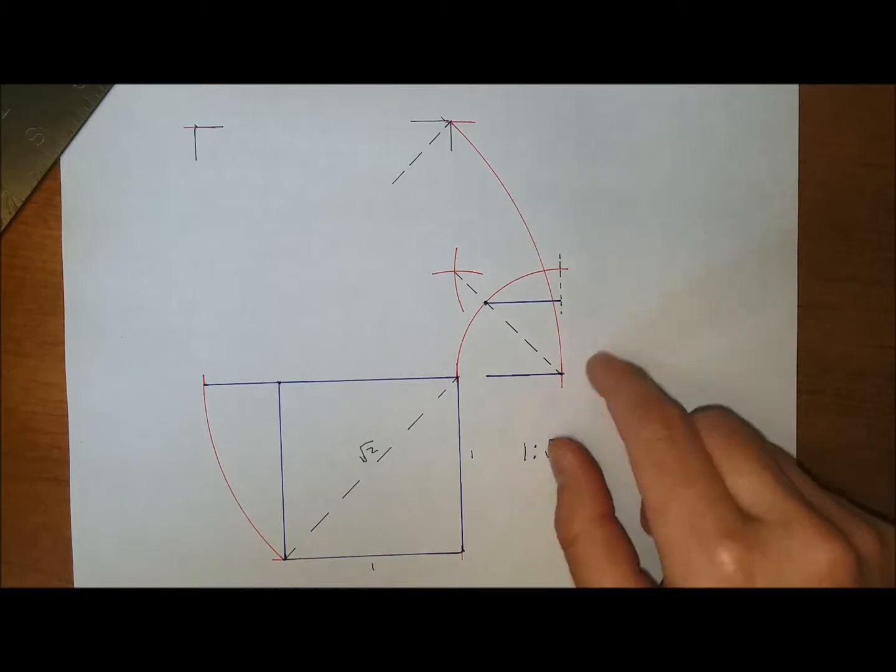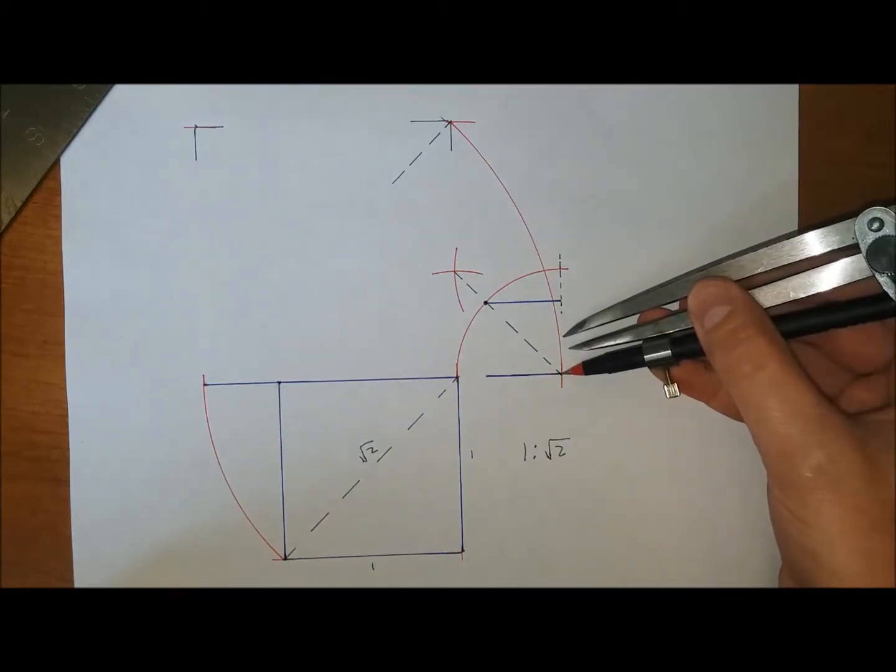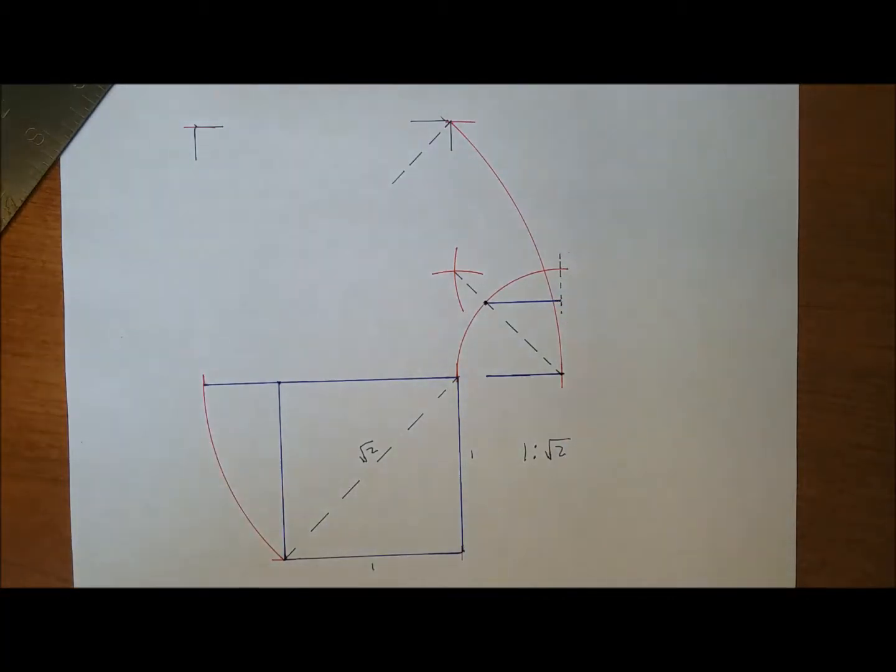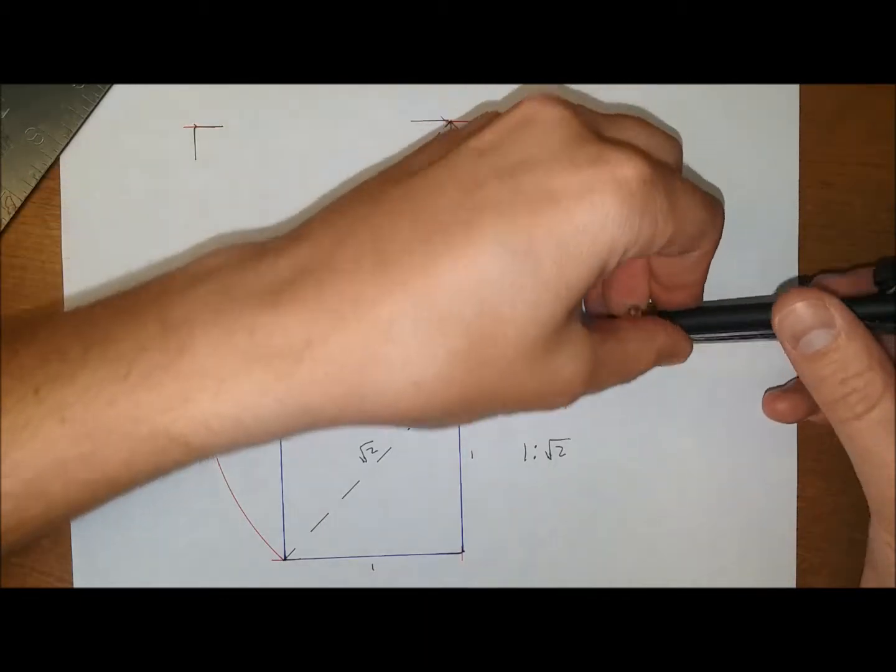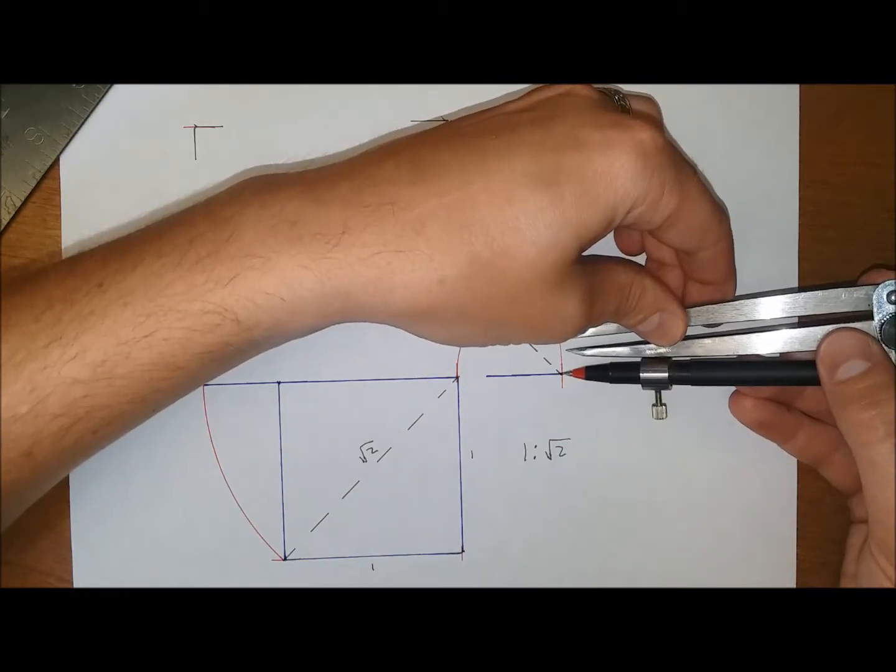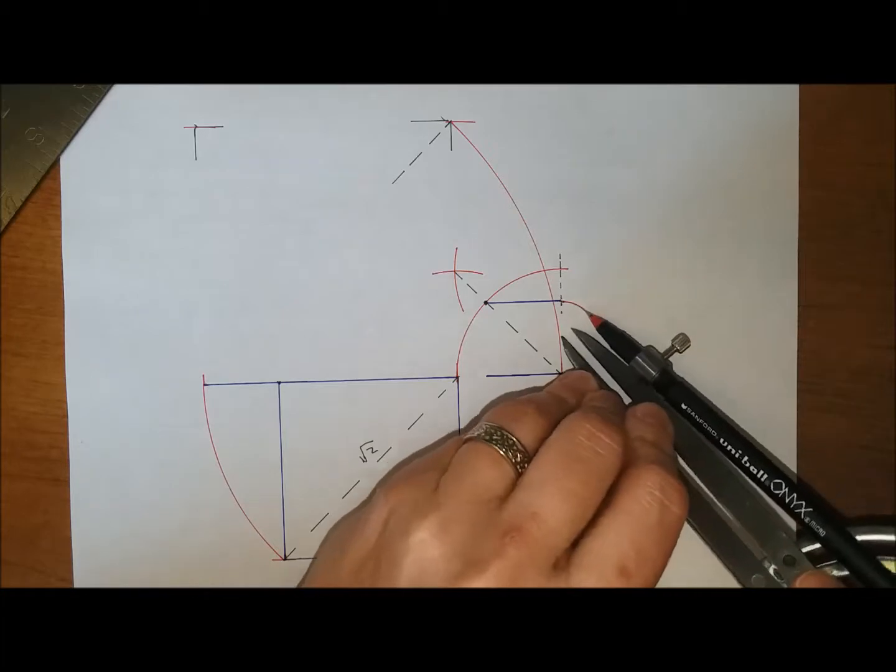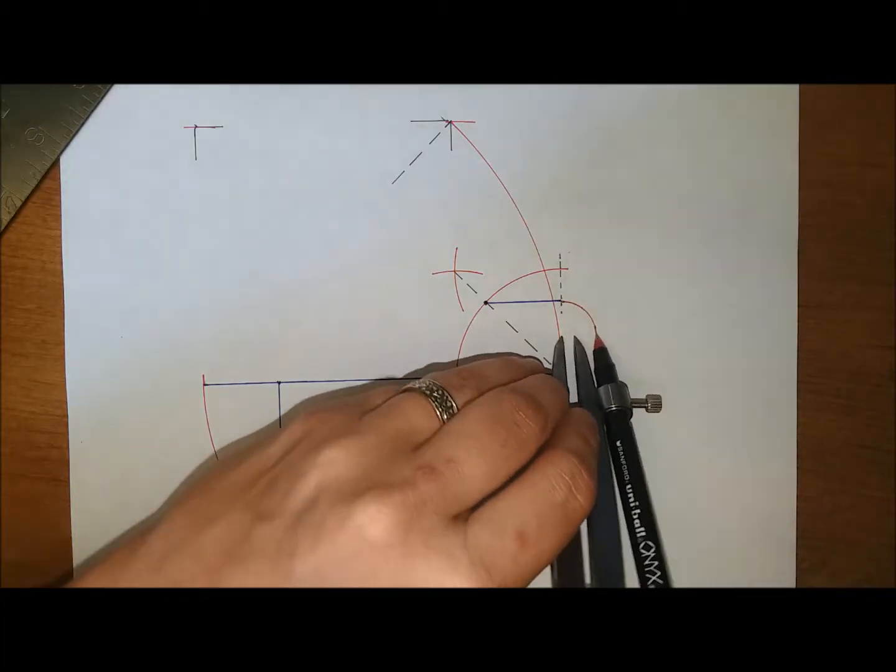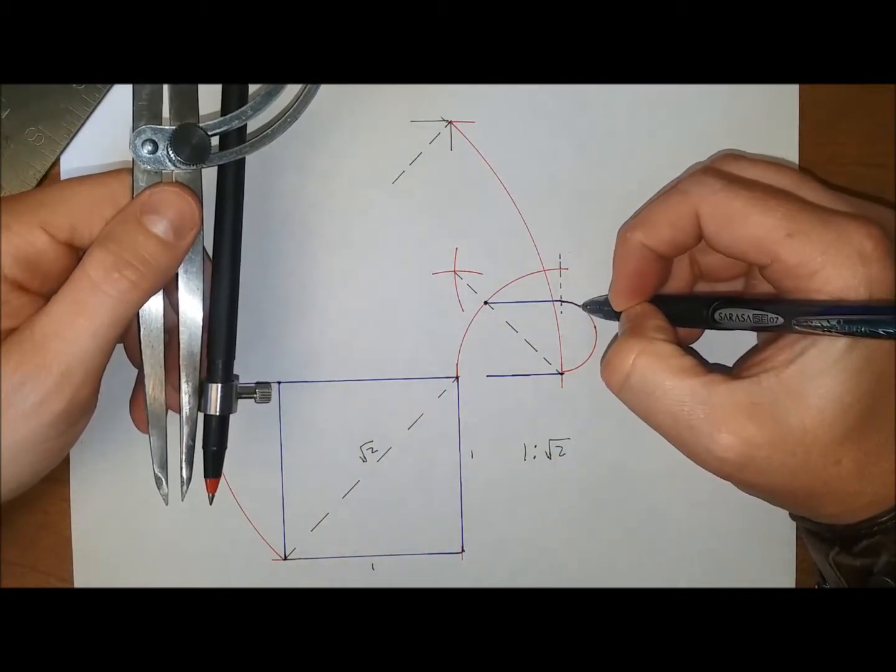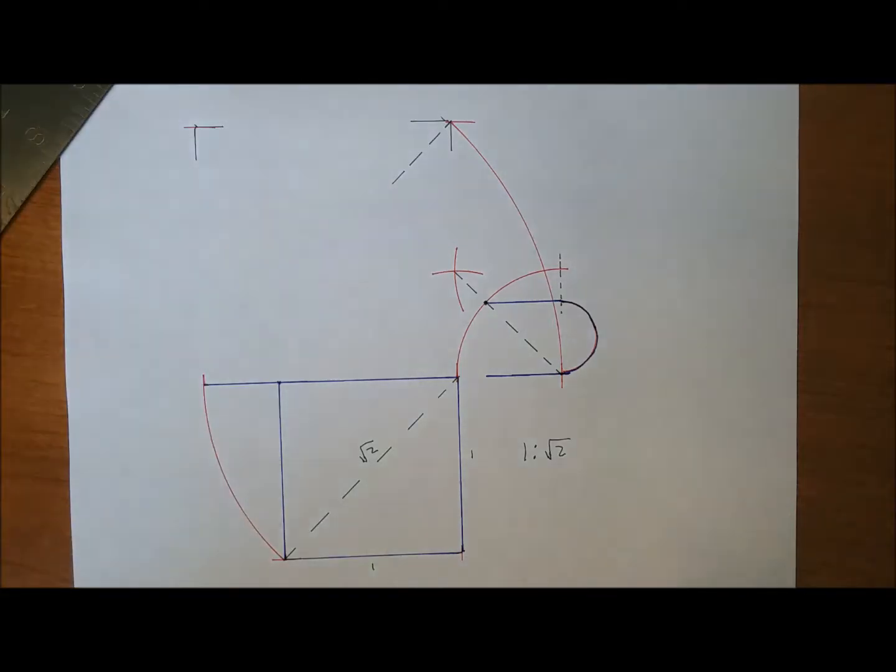So next thing we're going to do is find the apse, which is always a semi-circle. So for this, we're just going to find the distance and turn it into a semi-circle. Just like that. It's slightly off, you can get it a little bit better than that, but for us it works. And there you go, so now we have the apse.